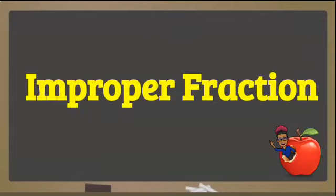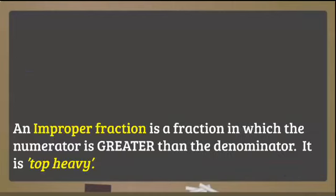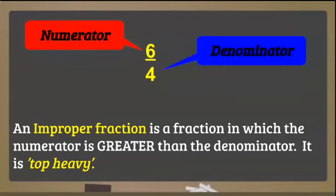Next type, improper fraction. An improper fraction is a fraction in which the numerator is greater than the denominator. It is said to be top heavy. So here we see the numerator 6 greater than the denominator 4.